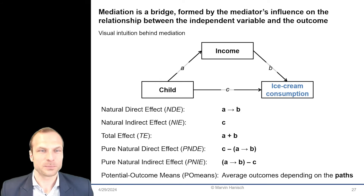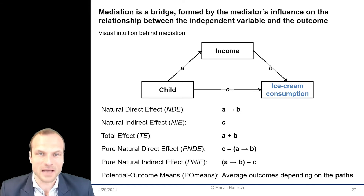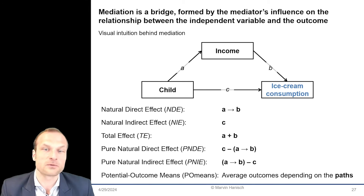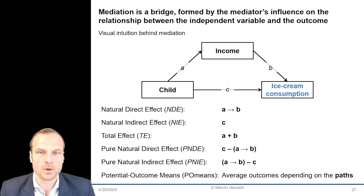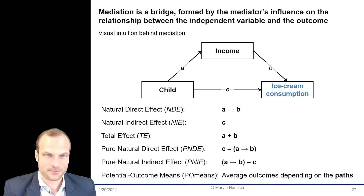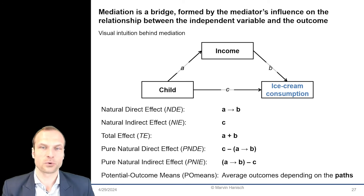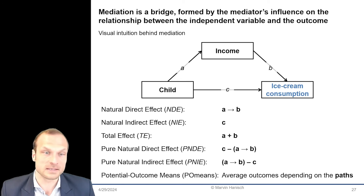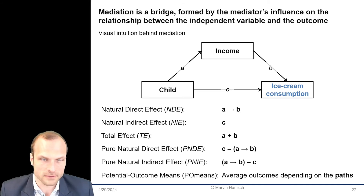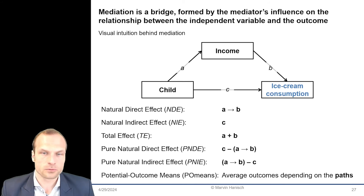Then we have the pure or total natural direct effect. This is the direct effect that would be observed if the indirect paths through the mediator were blocked — like the effect of the main road when all the detours are closed. Then we have the pure or total natural indirect effect. This is the indirect effect that would occur if the direct path didn't exist, like imagining only the detour is available with the main road closed.